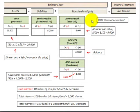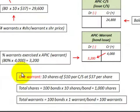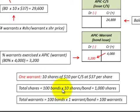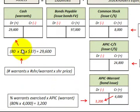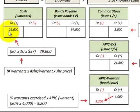Now let's look at how we'd record these warrants once they're exercised, using the example where 80% of these warrants were exercised. For one warrant, you would be able to receive 10 shares of $10 par common stock, and you'd have to pay $37 per share. The total shares available would be 100 bonds times 10 shares per bond, or 1,000 shares, with 100 total warrants. With 80% of warrants exercised, that's 80 warrants times 10 shares per warrant times $37 per share, giving us a total cash debit of $29,600.